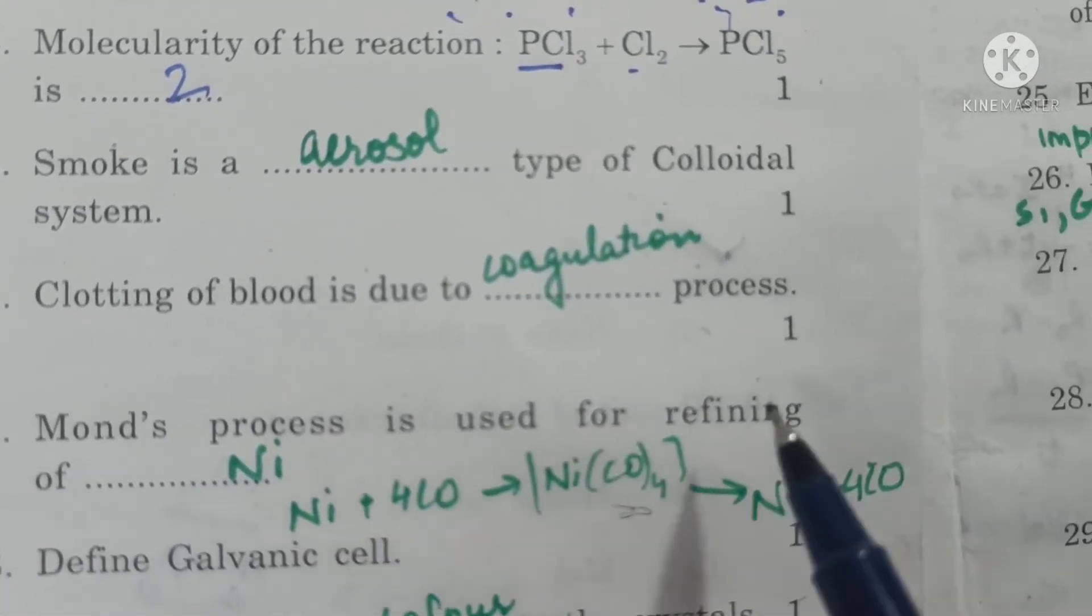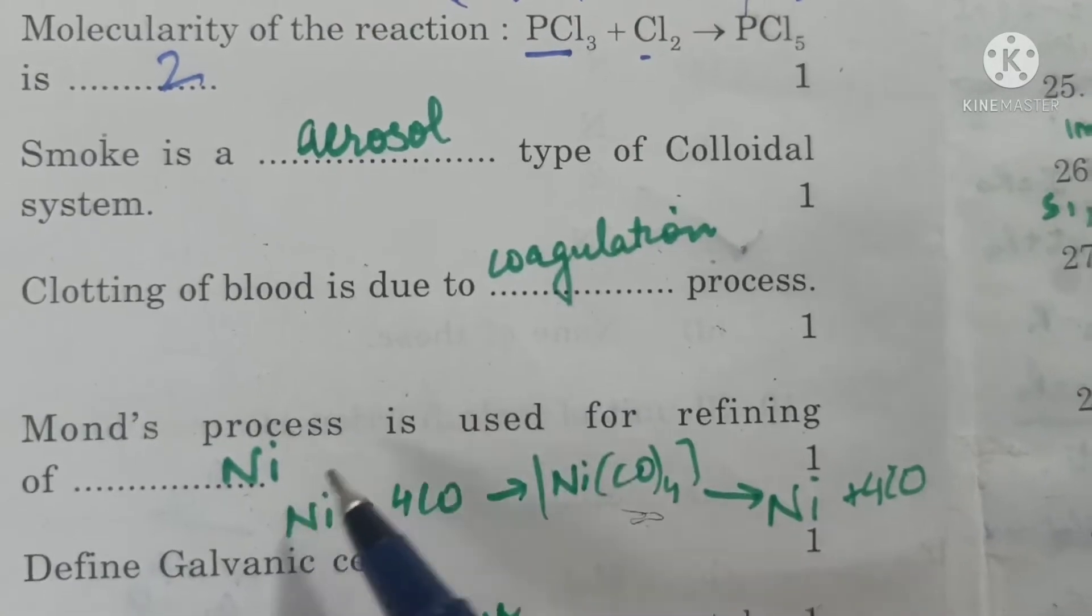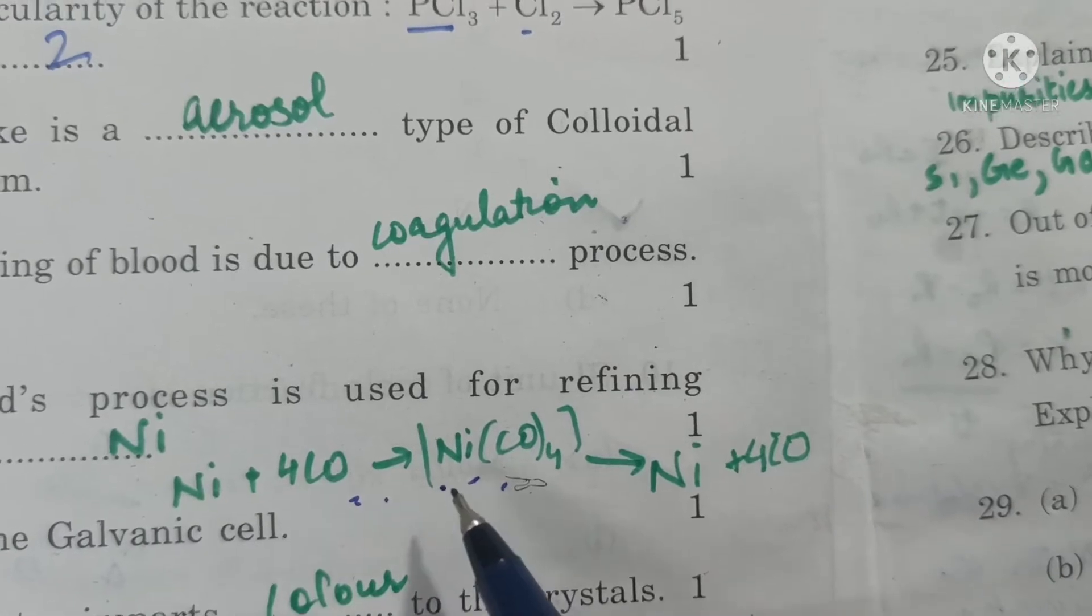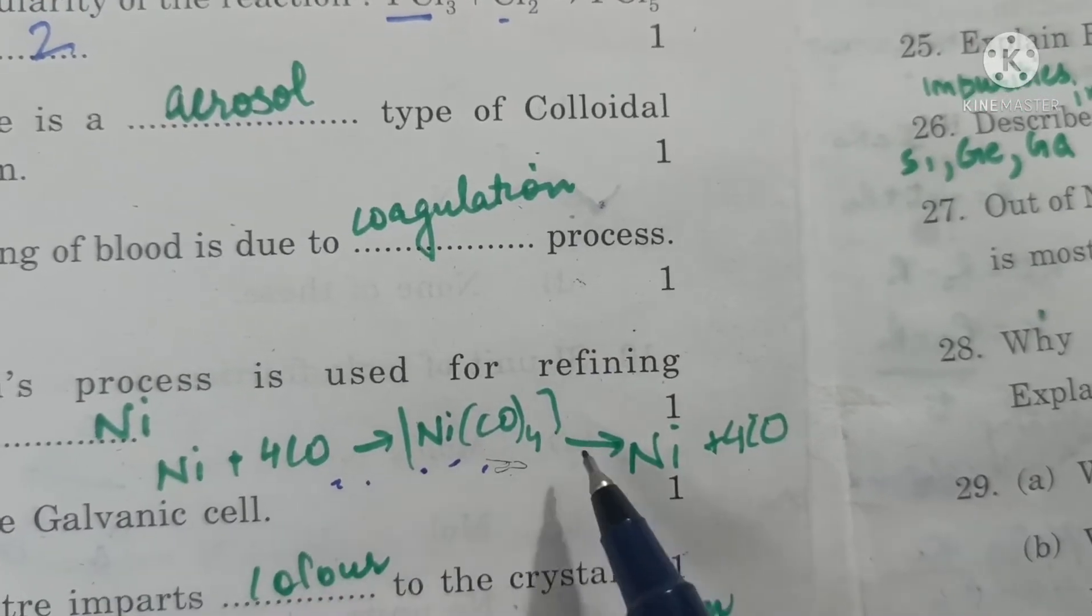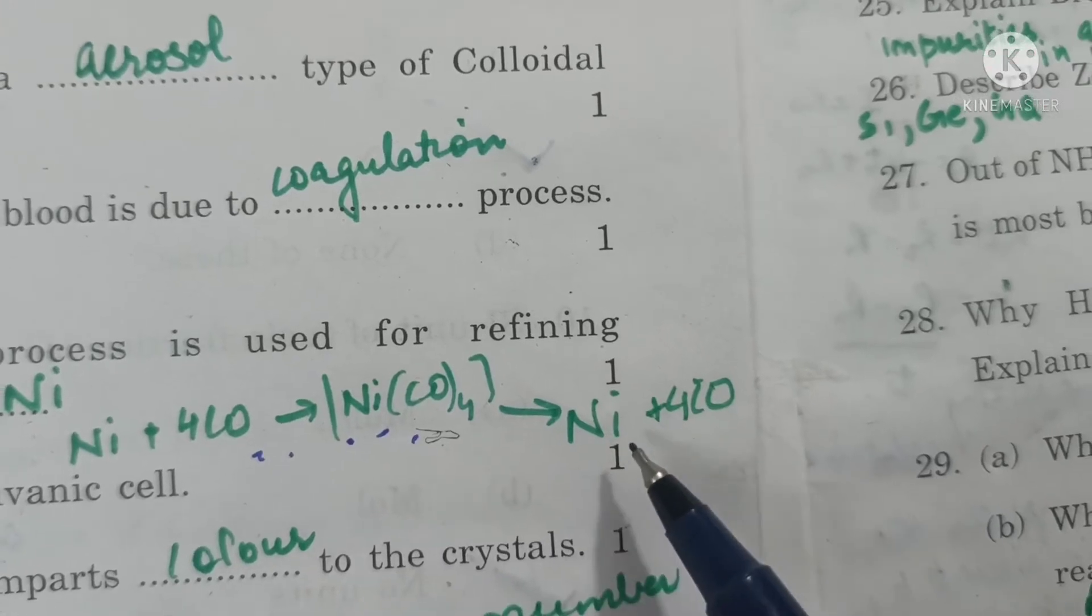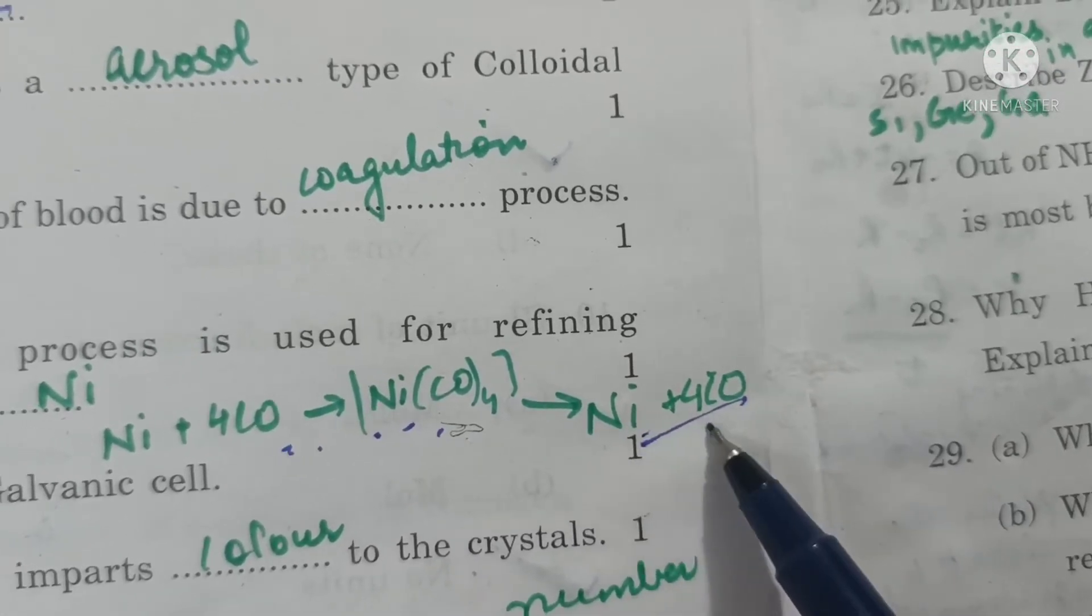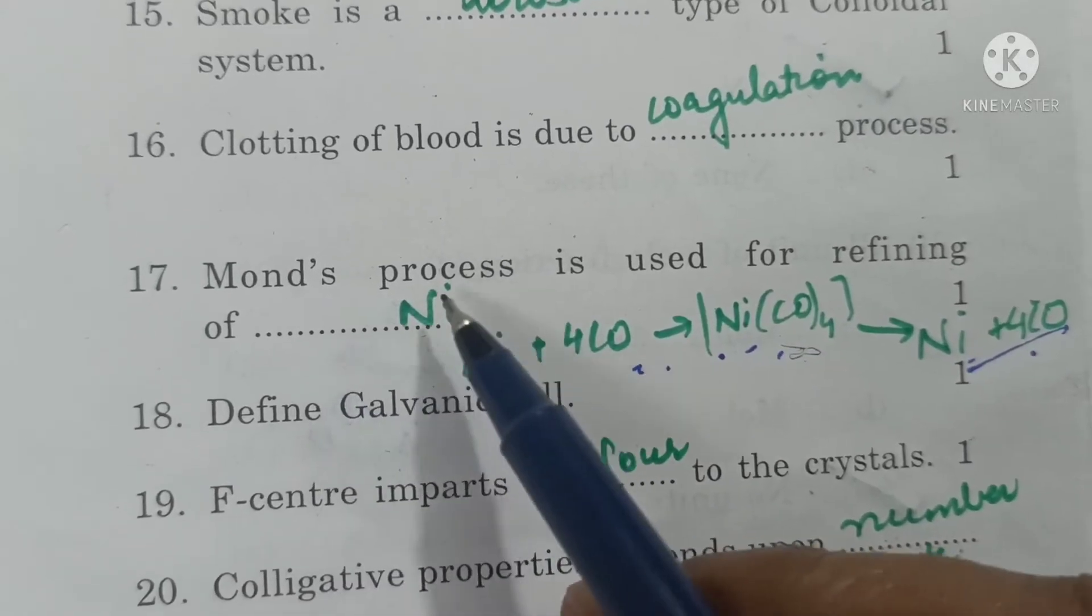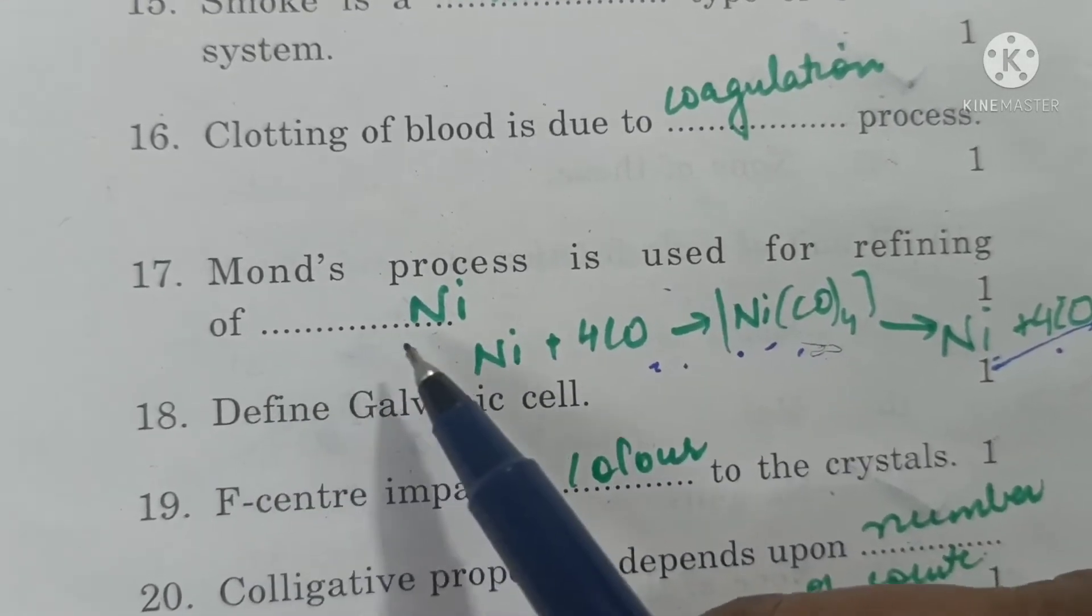Mond's process is used for refining of nickel. Nickel is heated with carbon monoxide to form tetracarbonyl nickel. The vapors move to other spot, impurities are left behind, and then at higher temperature it is decomposed back to nickel and nickel is purified.